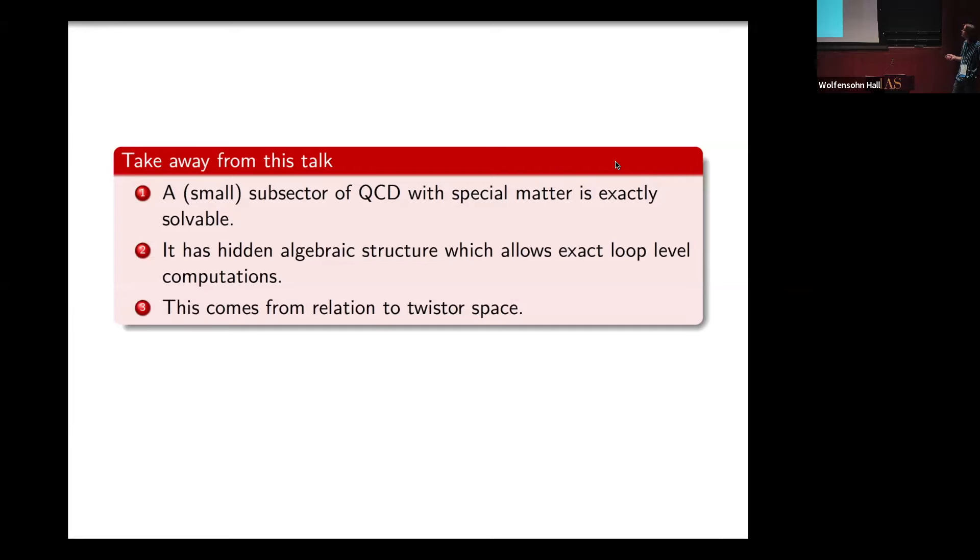It's a small subsector, limited in how far you can go on the loop number and in what helicity configurations, but it's still not zero. There's a hidden algebraic structure which in this subsector allows you to do loop-level computations exactly. All of this comes from the relation to twistor space.